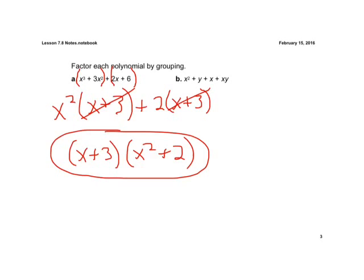Let's try example B here. Let me clear this. Now we look at those first two terms, x squared and y, we can't factor anything out of that. So what we really need to do is rearrange it. It's an addition problem, so we know we can do that. Let's just go ahead and flip this x and y.